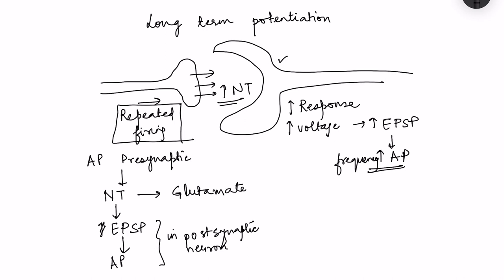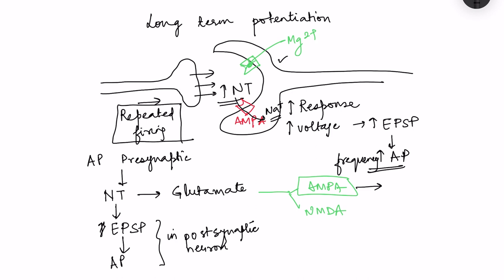Glutamate has two types of receptors on the post-synaptic neuron: AMPA receptors and NMDA receptors. Glutamate can bind to both receptors. However, NMDA receptors are actually blocked by magnesium ions, so they do not open. Instead, it is the AMPA receptors which open.